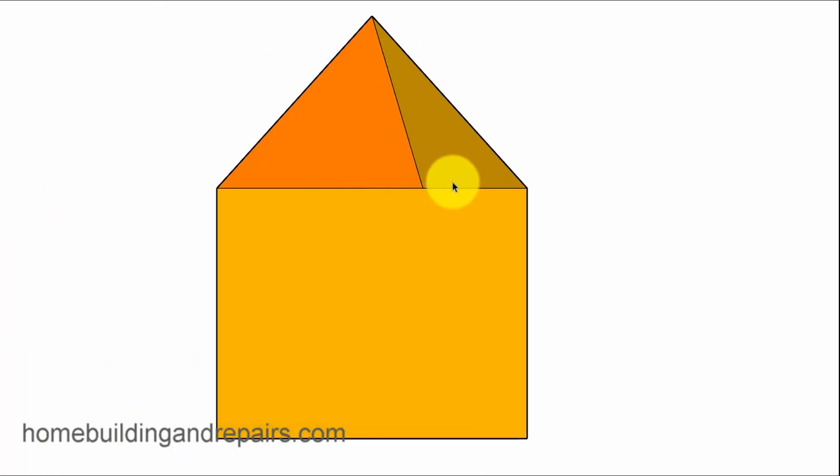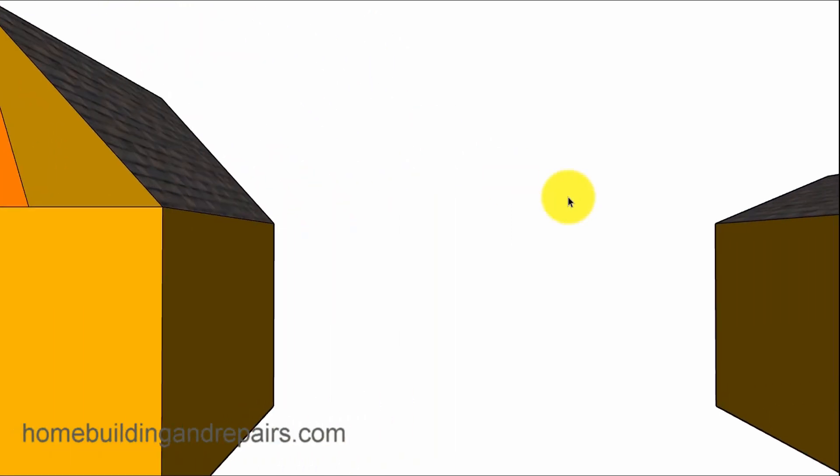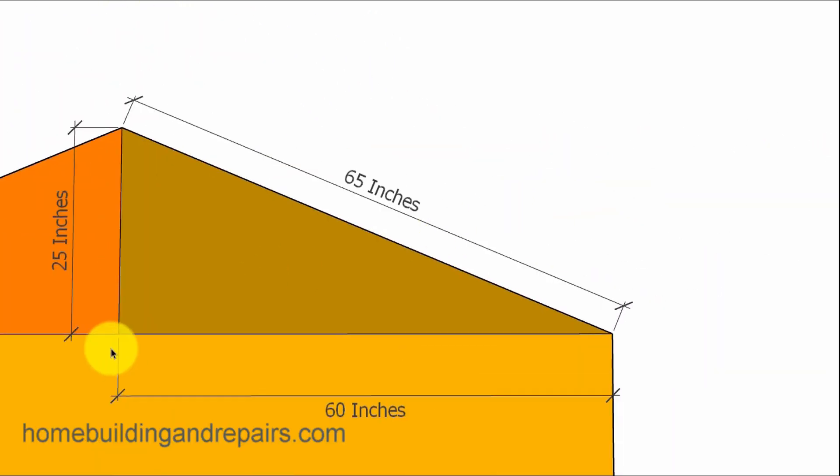Like I said, it's got to be at a 90 degree angle. You can't use it for something like this. It's got to be something like this where you have a 90 degree angle here. Now let's go ahead and bring some measurements in here. It is a 10 foot wide building. Half of the span of that is 5 feet or 60 inches. We have a 25 inch height at the top here and then 65 inches will be the angle.